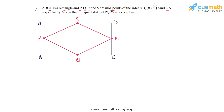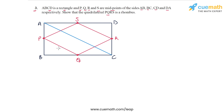We will start by proving that PQRS is a parallelogram, and to do that all we need to do is draw one diagonal of the rectangle. So let's draw the diagonal AC, and then we will study the relationship of PQ with AC and RS with AC.